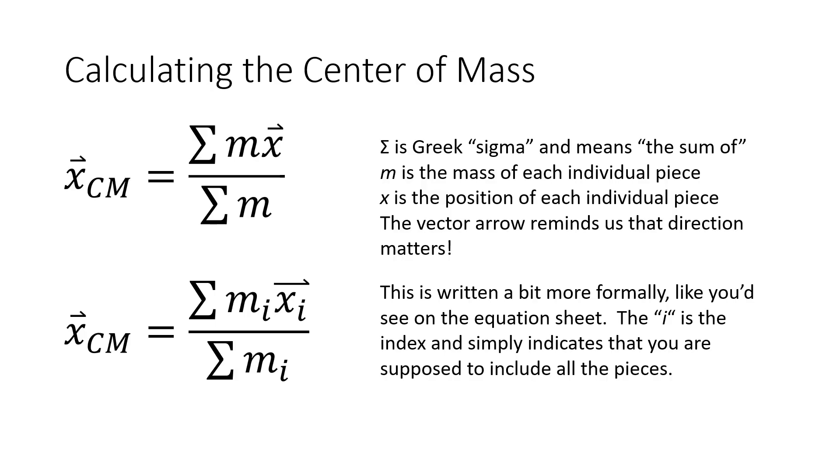When you look at that equation on the formula chart and in textbooks, it's written with these little subscript i's on everything. The i represents the index mathematically. For us, it really just reminds us that we're supposed to include all the pieces. So i is like for every single piece, piece one, piece two, piece three, all the way to however many pieces you've got. I don't typically write it that way with the i's. I feel like it's unnecessary, but you'll see it written that way in textbooks and the formula chart.